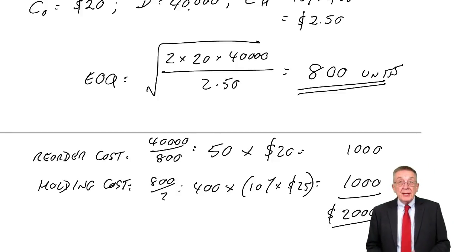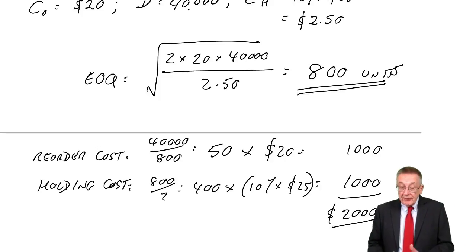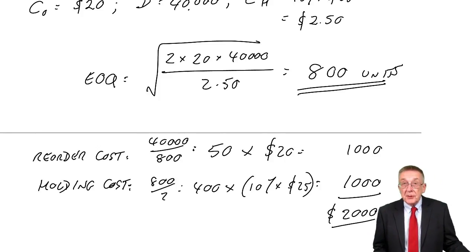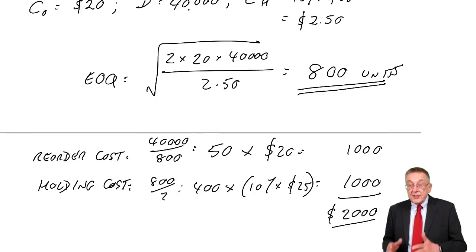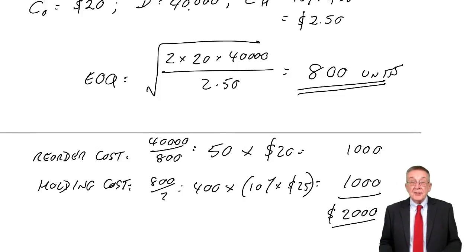We've looked at the economic order quantity, and we found out in the last lecture, in example two, that the economic order quantity was 800 units. That was the order quantity that minimized the total inventory costs over the year, and they were minimized at a total of 2,000.